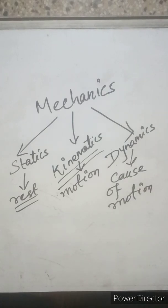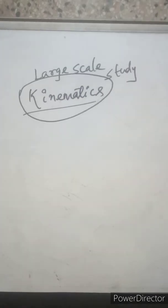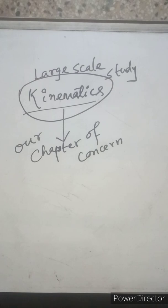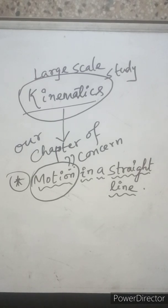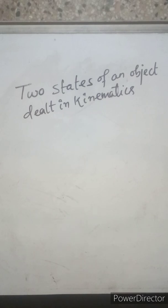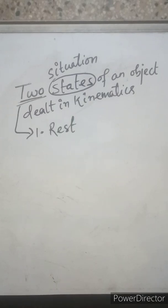We are more concerned about kinematics. It is a huge area of study, but our chapter of concern will be motion in a straight line — the motion of an object along a straight line. In kinematics, we will be discussing two states or situations: rest and motion.